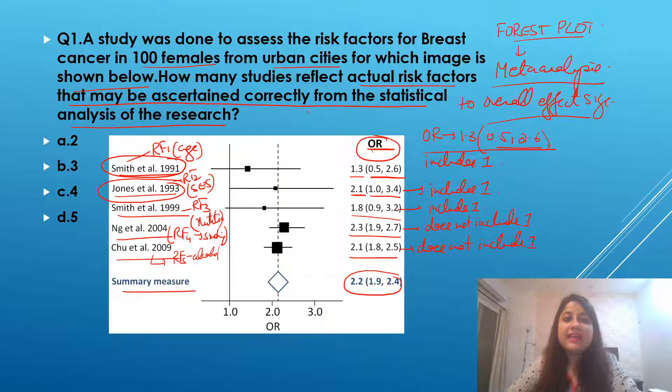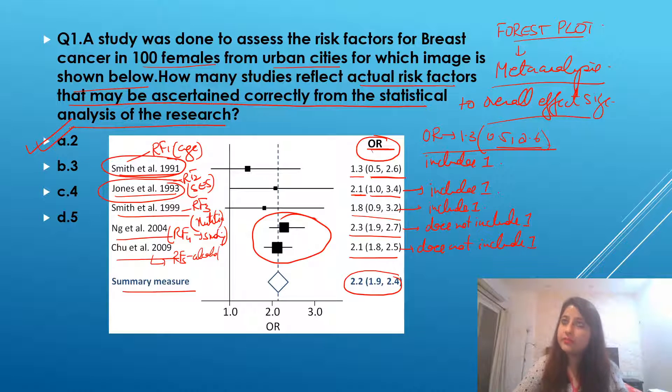So again, if I mark the answer to this, how many studies reflect actual risk factors that are showing the statistical significant association with breast cancer? It is how many studies? Only these two. So answer here was two.